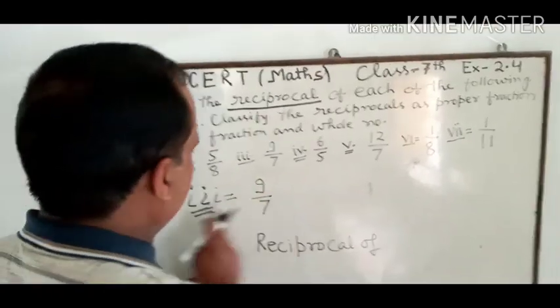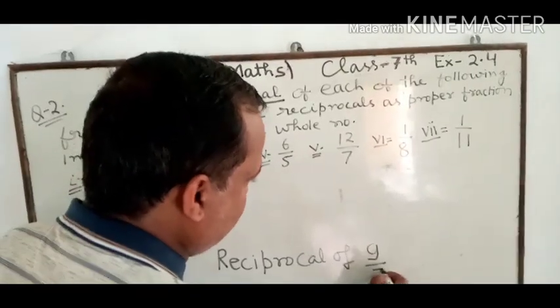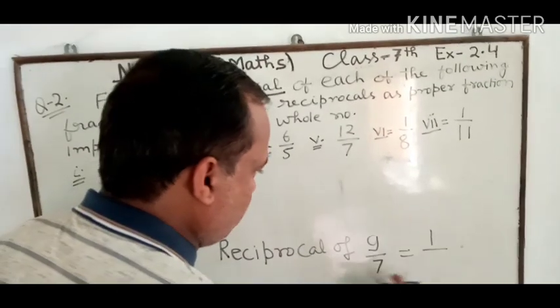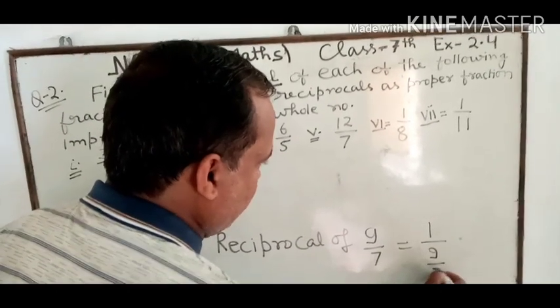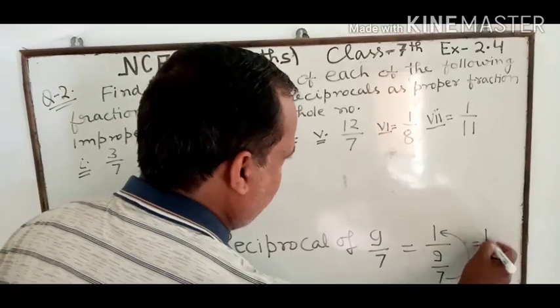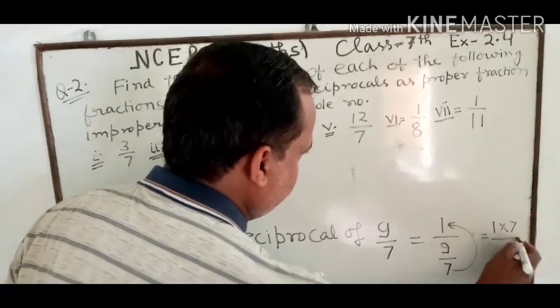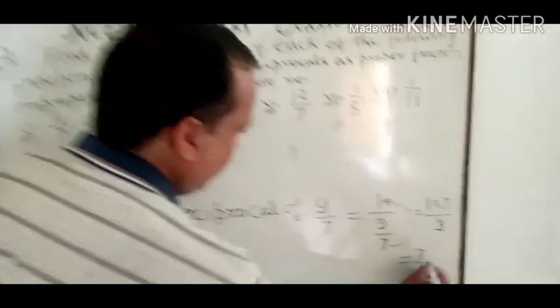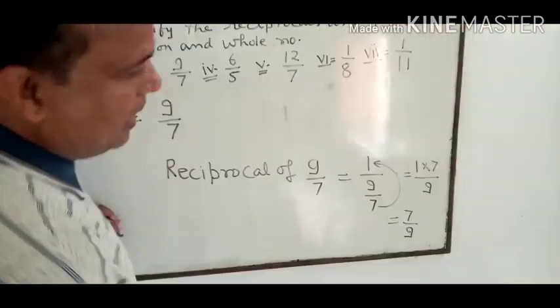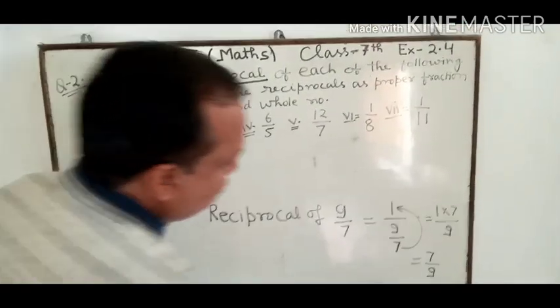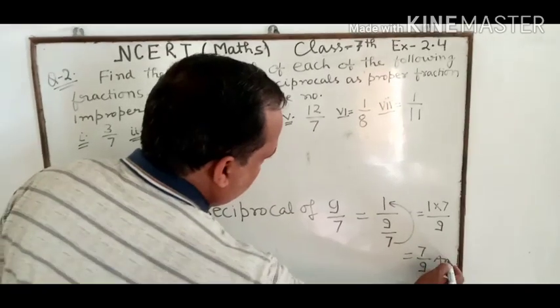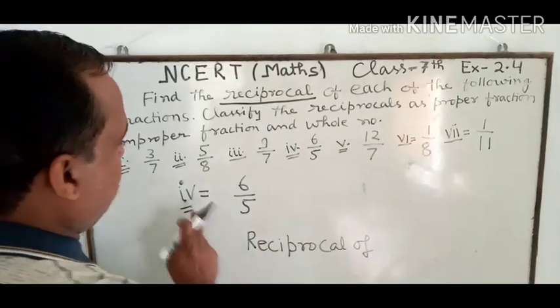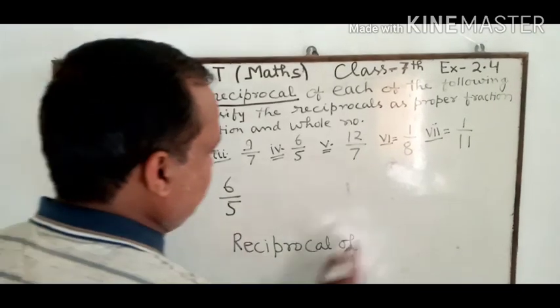Third part: 9 upon 7. Reciprocal of 9/7 equals 1 upon (9 upon 7). अब यह 7 ऊपर shift कर गया, so 1 multiply 7 upon 9 = 7 upon 9. अब यह change नहीं होगा क्योंकि 9 बड़ा है और 7 छोटा है, division नहीं होगा, तो इसी रूप में रख देंगे — 7 upon 9 is the answer.